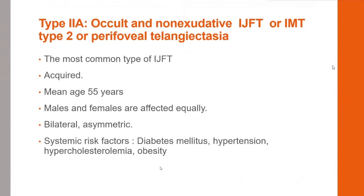Coming to the main topic — idiopathic macular telangiectasia or parafoveal telangiectasia — this is the most common type of IJFT. It is acquired with a mean age of presentation of 55 years. Males and females are equally affected and the disease is bilateral but can be asymmetric. Systemic risk factors associated with IJFT type 2 include diabetes mellitus, hypertension, hypercholesterolemia, and obesity.